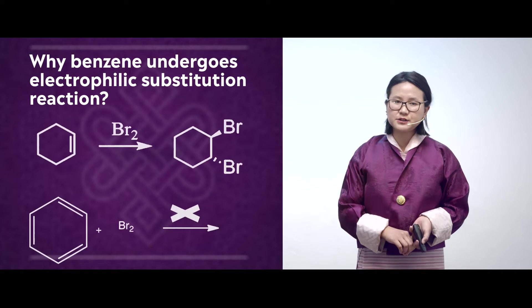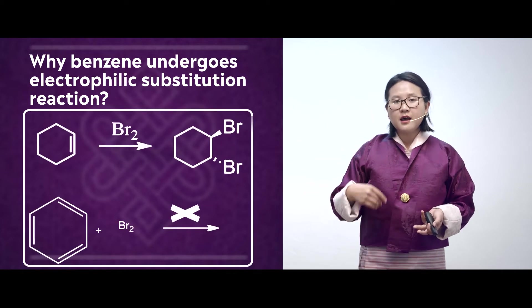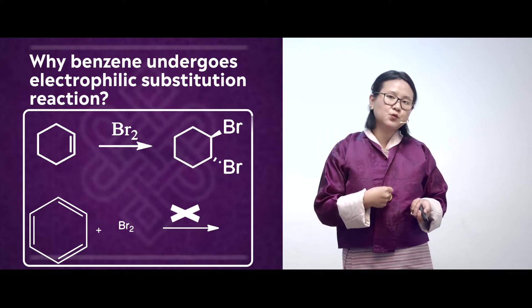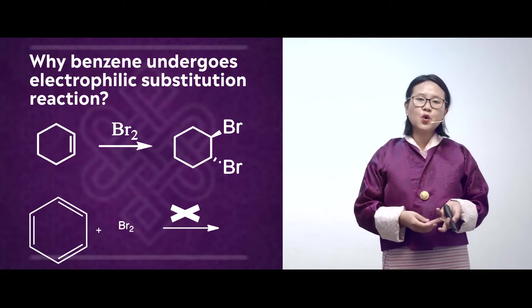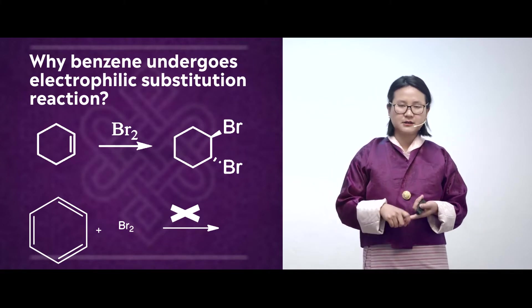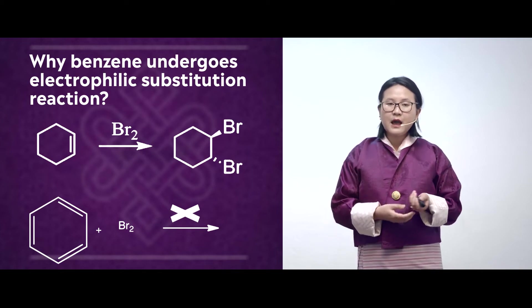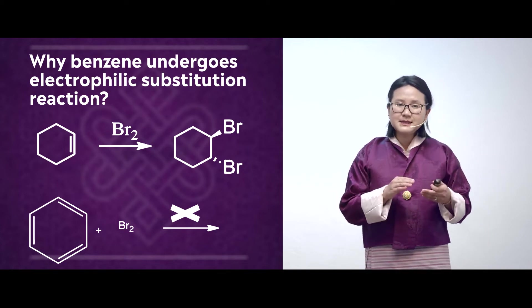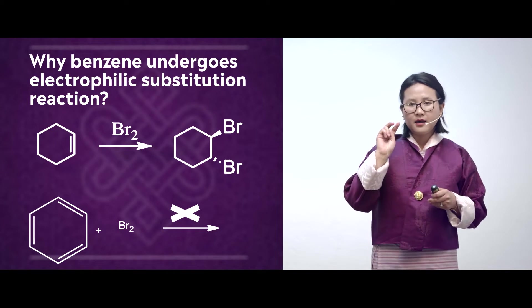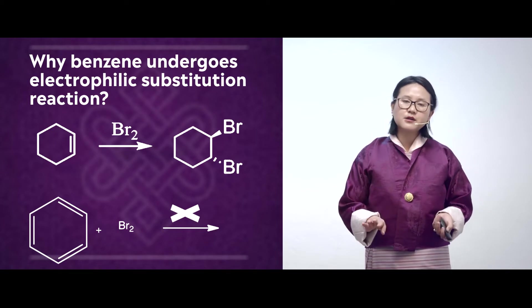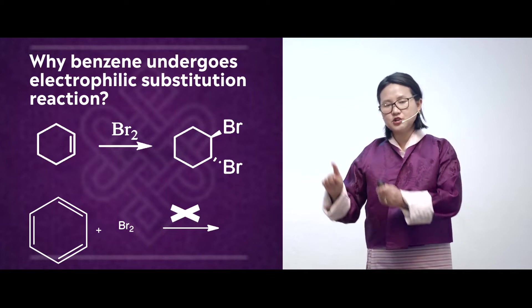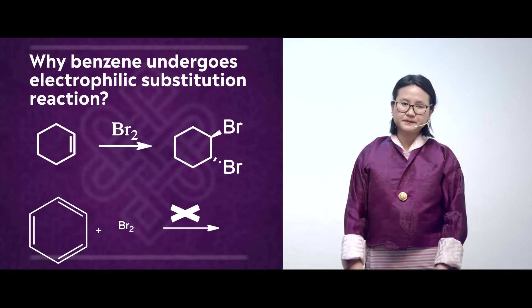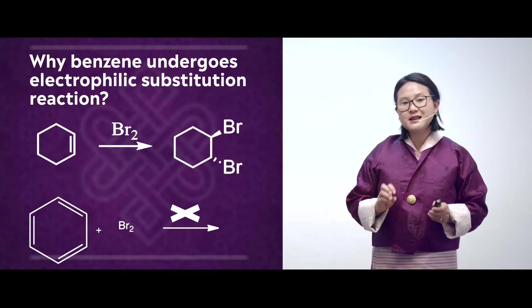Why do benzene or aromatic compounds undergo electrophilic substitution reaction? Let's have a look at two reactions. The first is a reaction for cyclohexene. When cyclohexene is reacted with bromine, it easily undergoes electrophilic addition reaction. However, if the same reaction is performed for benzene, benzene does not undergo electrophilic addition reaction.